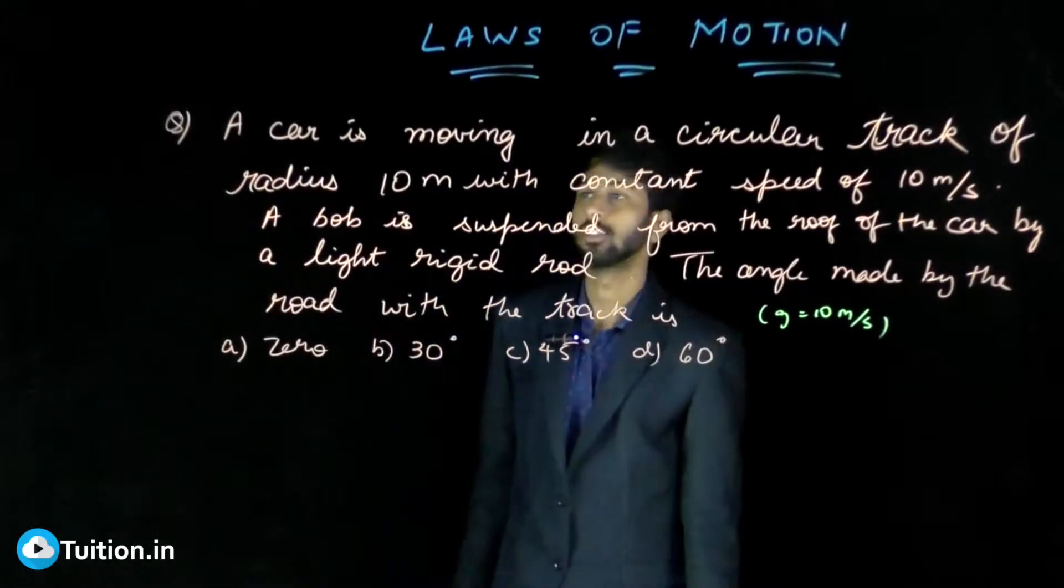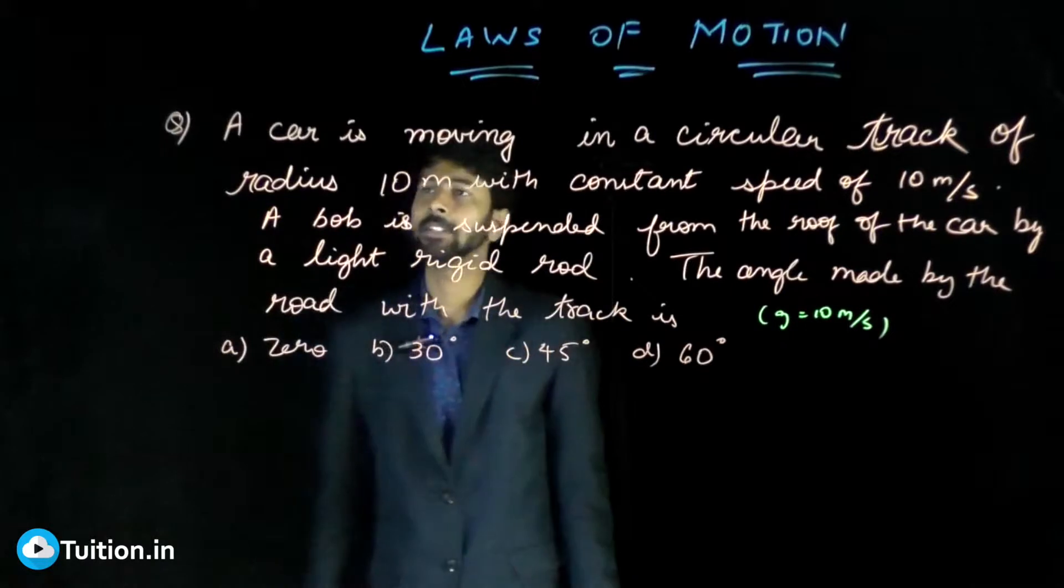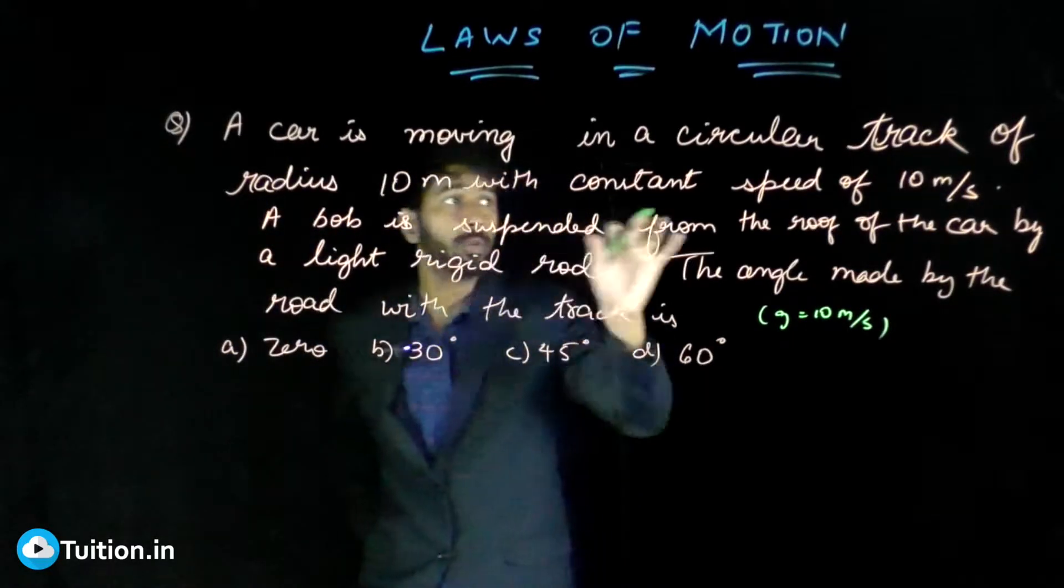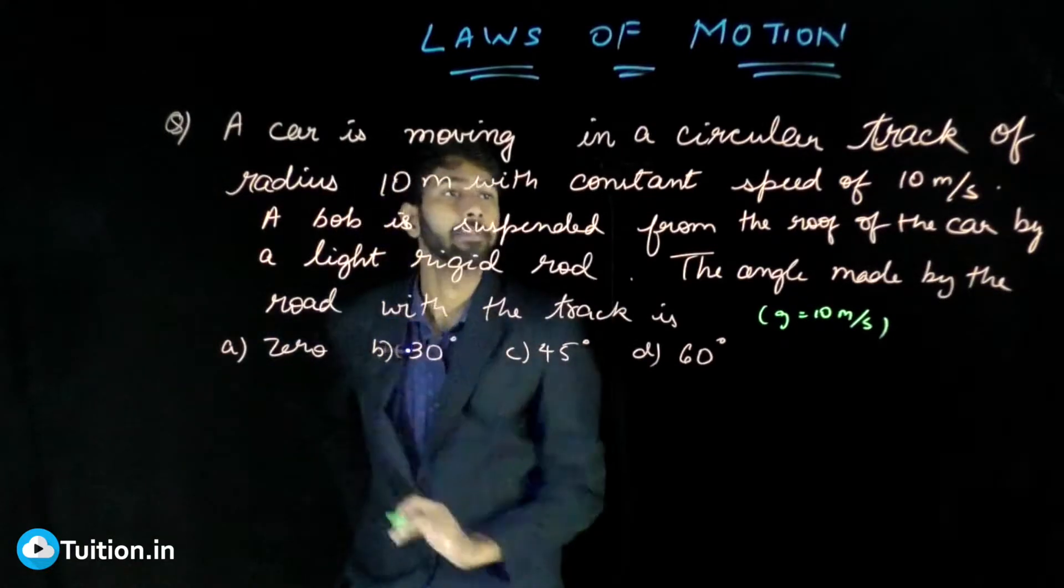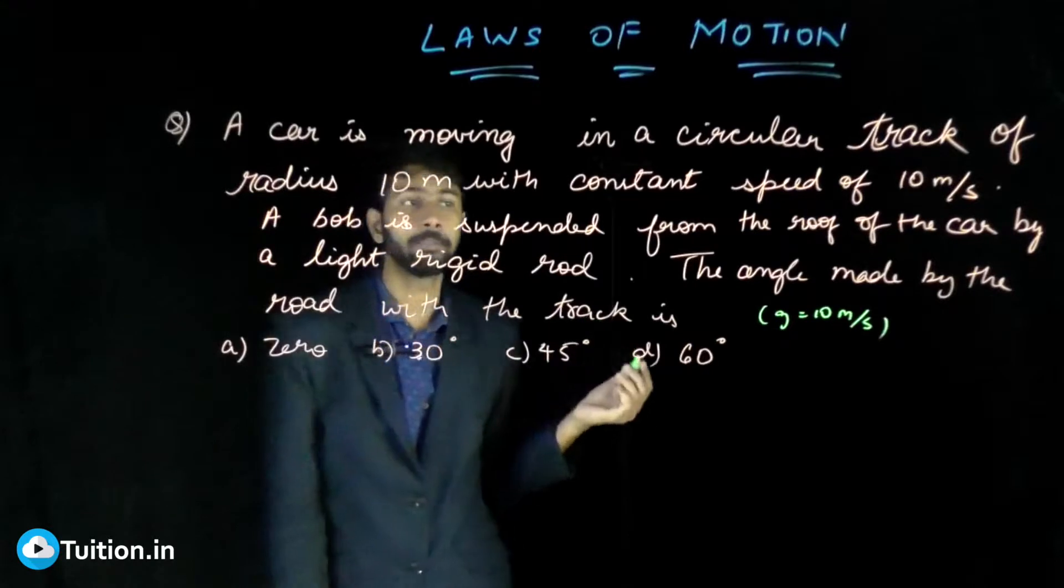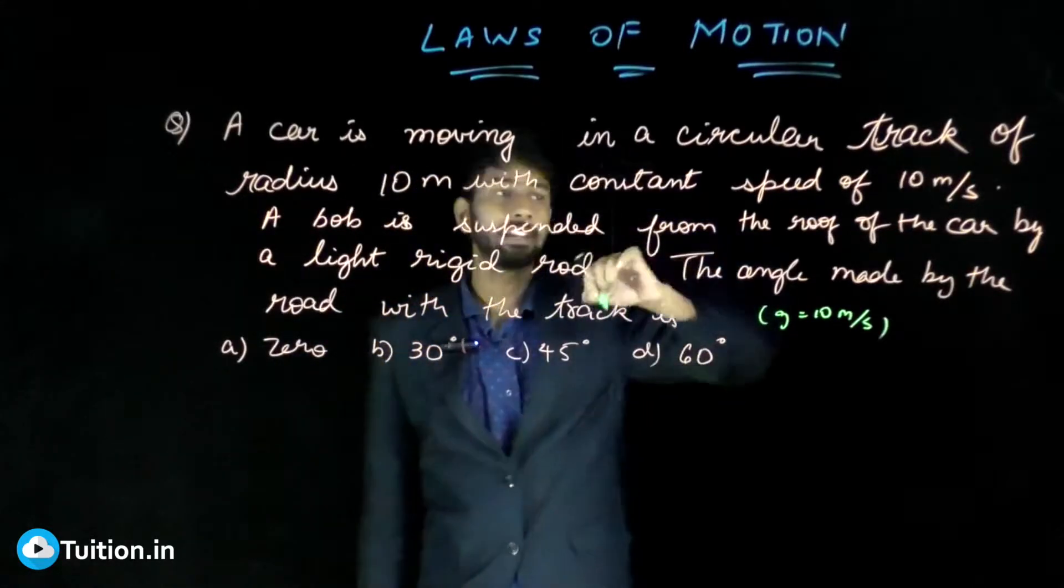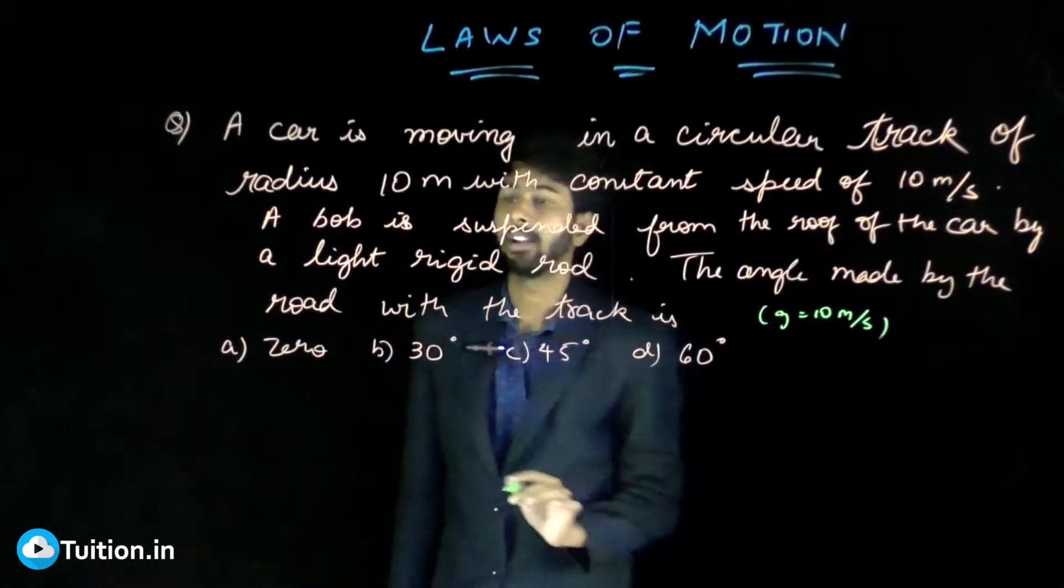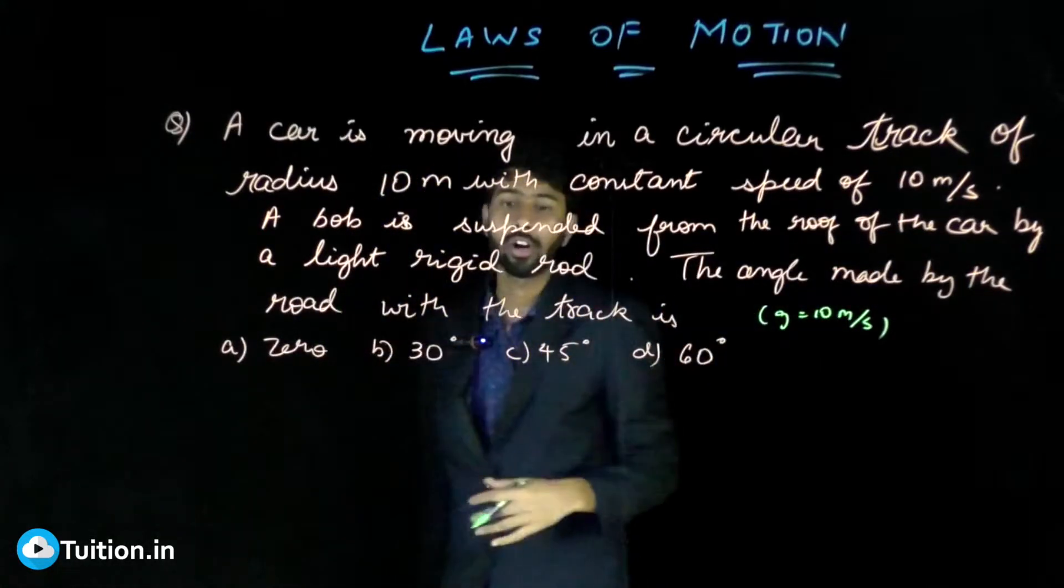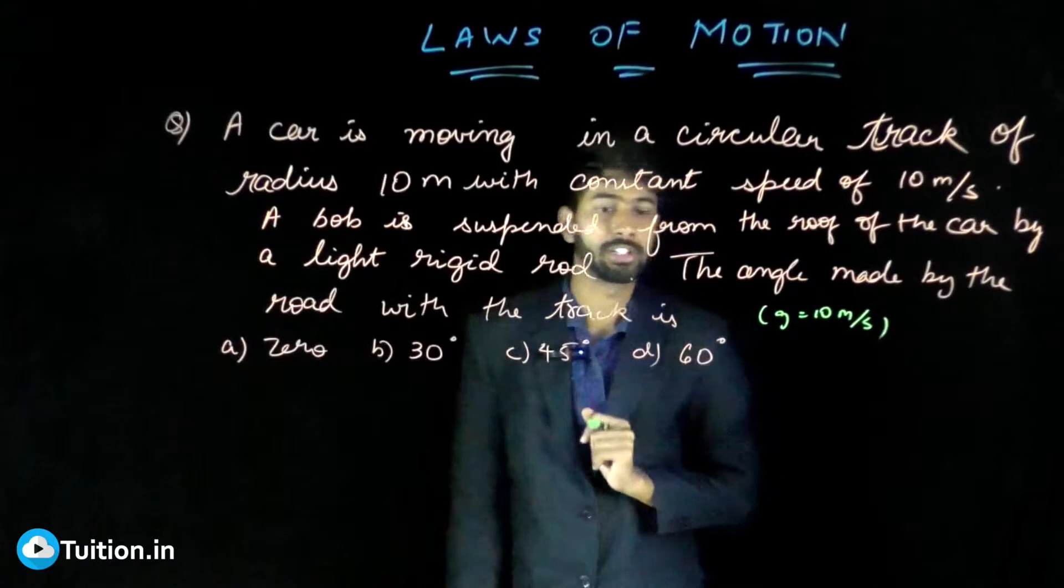Let's look at this previous problem from laws of motion again. A car is moving in a circular track of radius 10 meters with a constant speed of 10 meters per second. A bob inside the car is suspended from the roof by a light rigid rod. The angle made by the rod with the track is what we need to find.